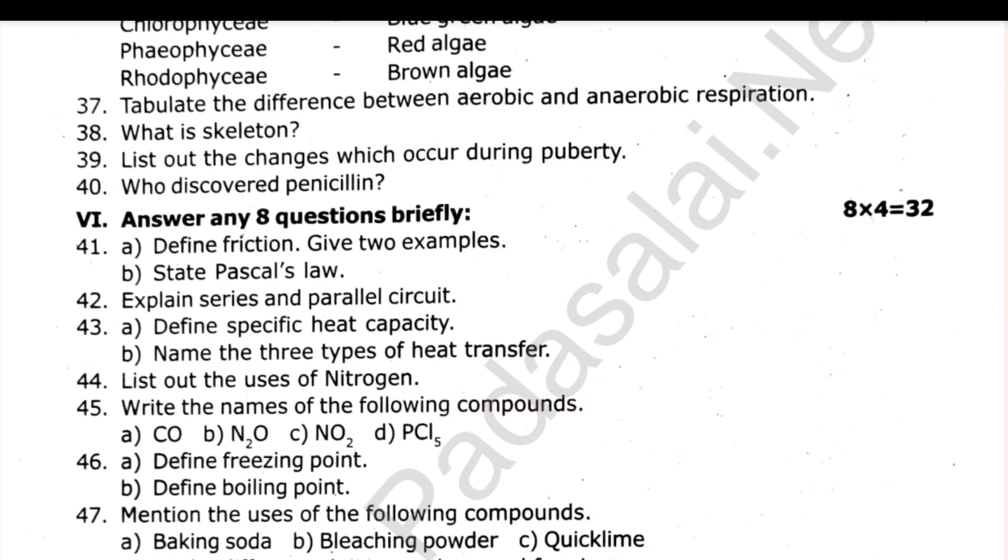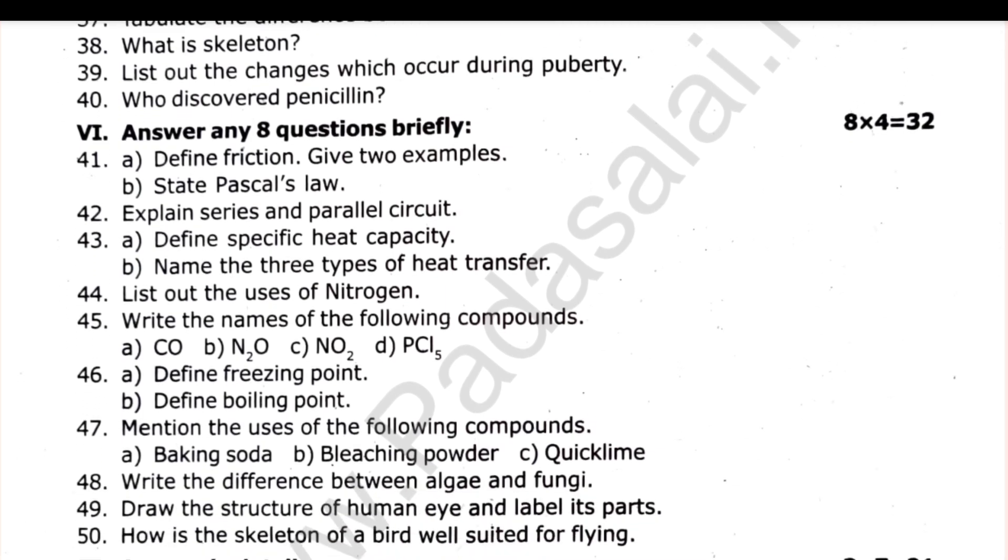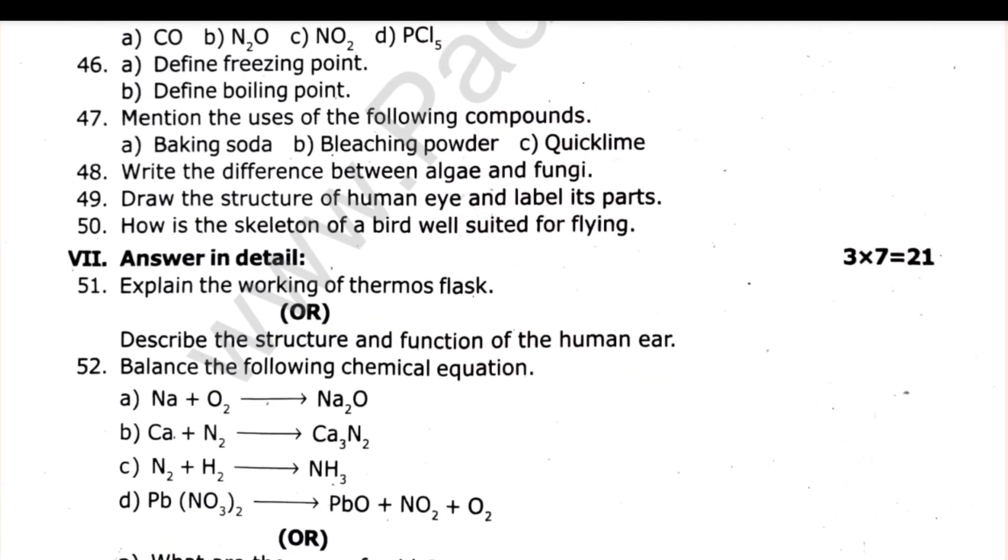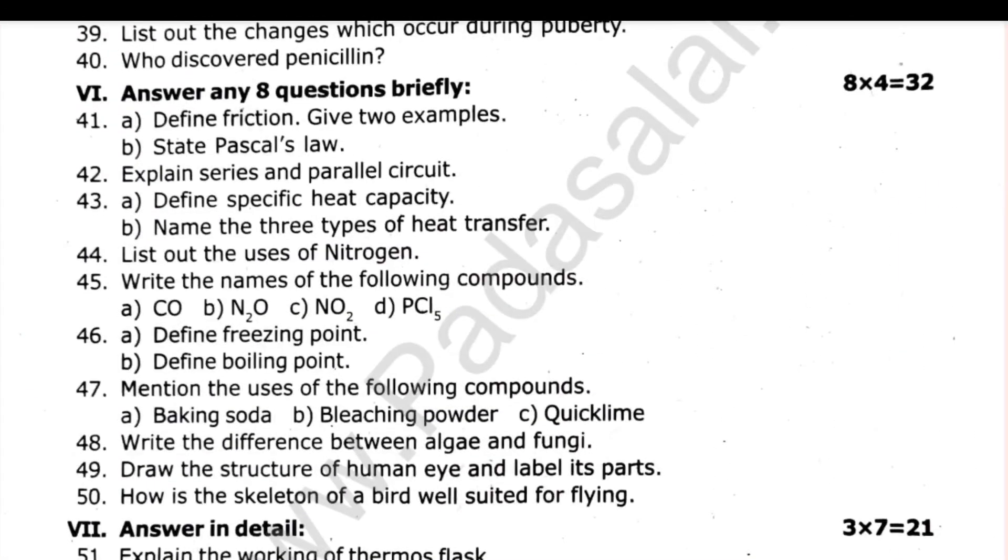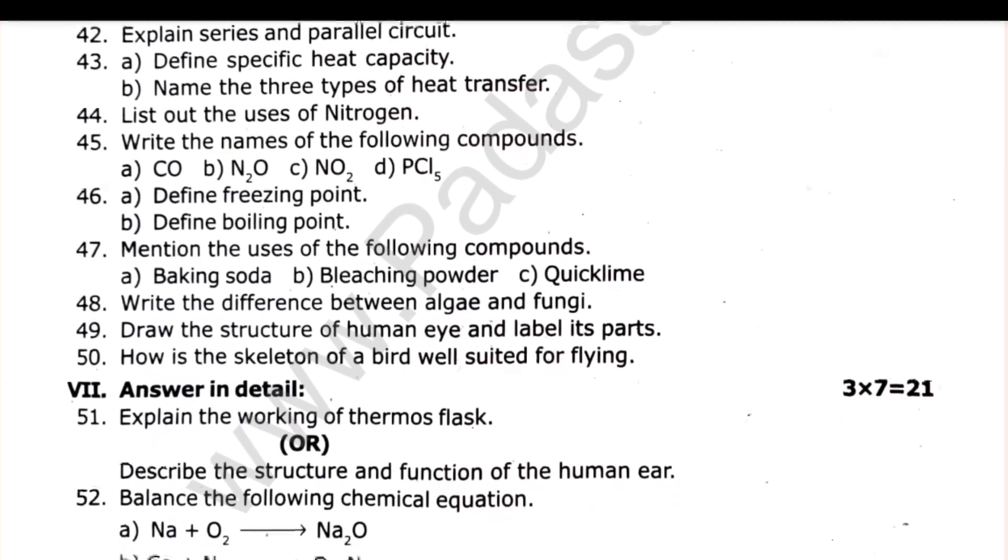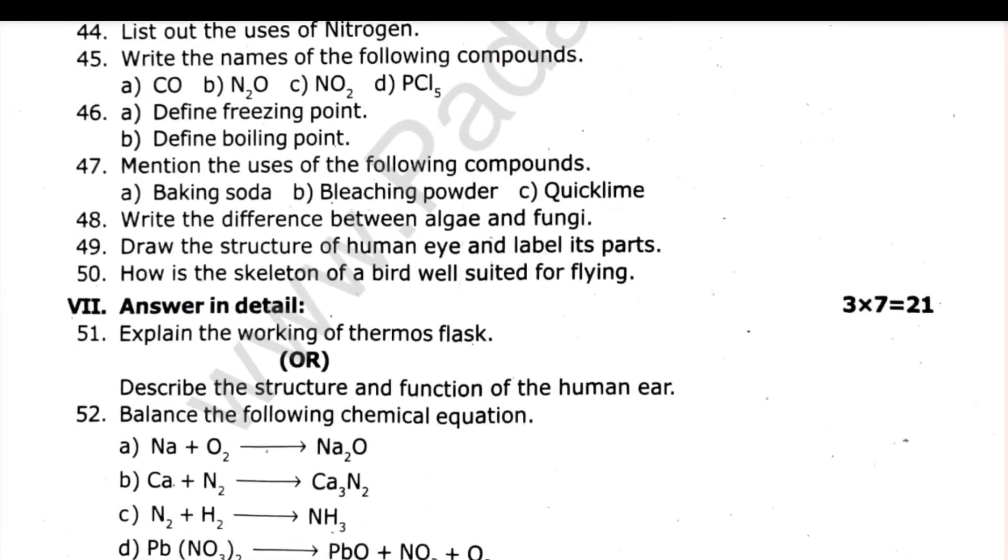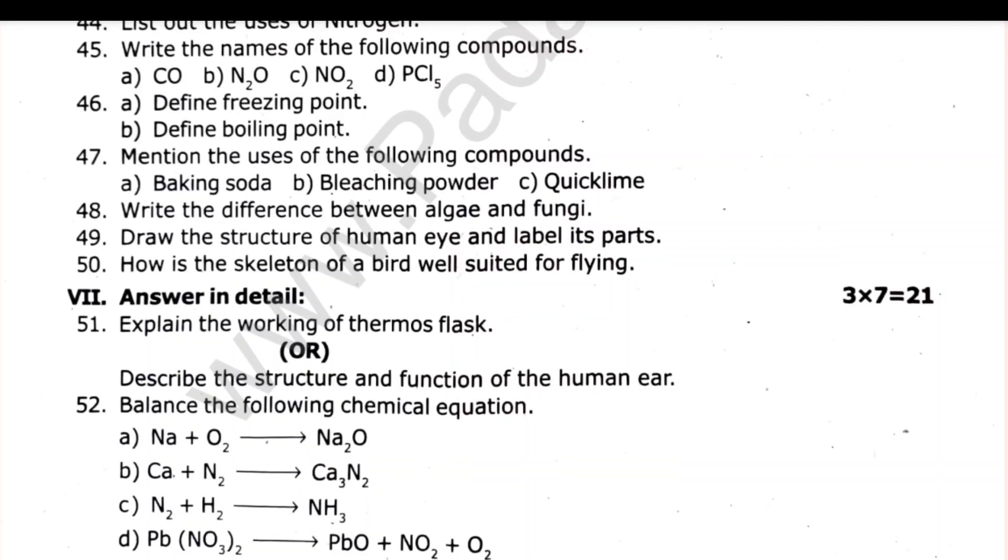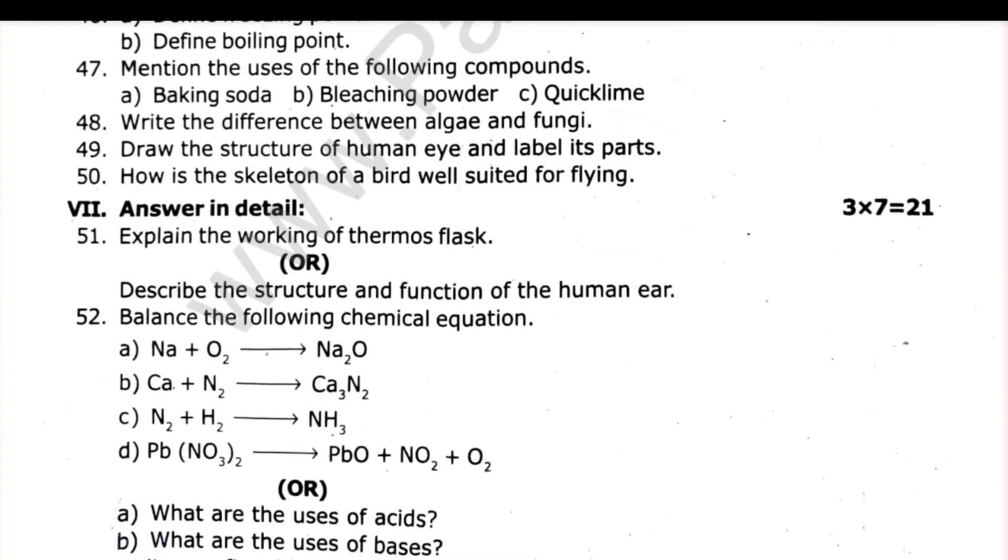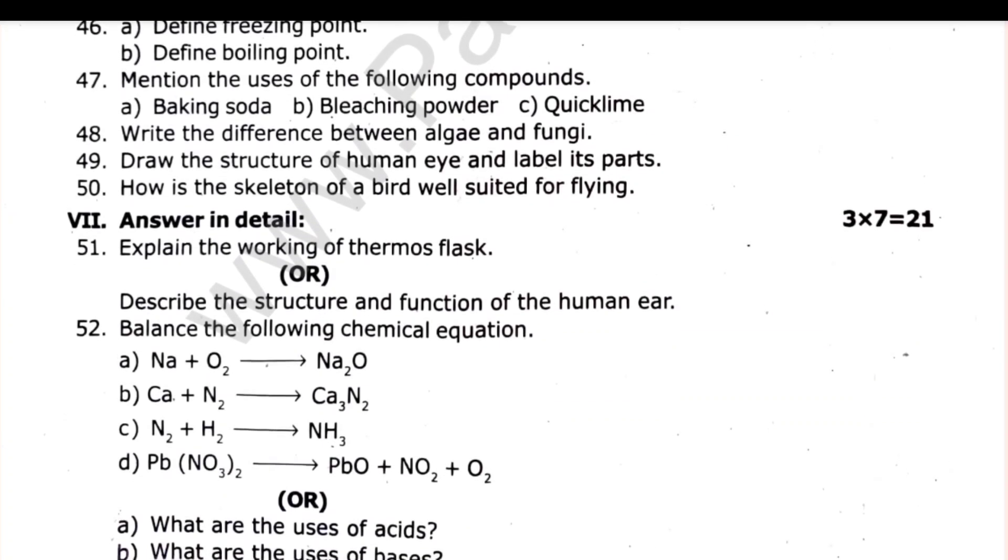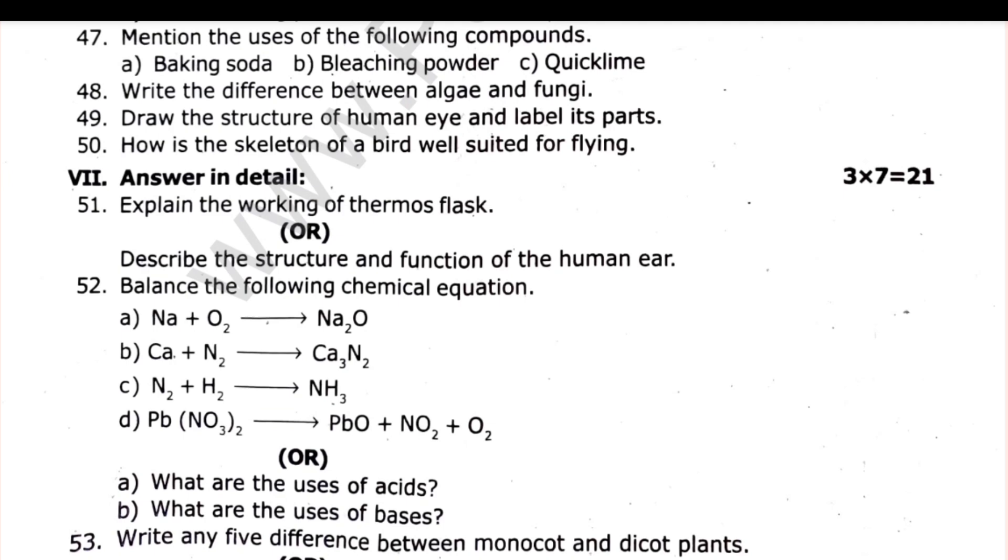Answer in detail, 3 by 7 equals 21. You have to choose a choice. For example, explain the working of thermos flask or describe the structure and function of human ear. 52, balance the following equation, or A and B, uses of acid and uses of base. Next, 5 differences between monocot and dicot plants or briefly describe menstrual cycle.